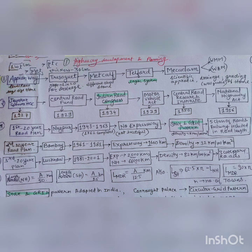Second 20-year road plan called Bombay Road Plan from 1961 to 1981, in which expressway of 1600 km was proposed and density of this plan is 13 km per 100 km square.